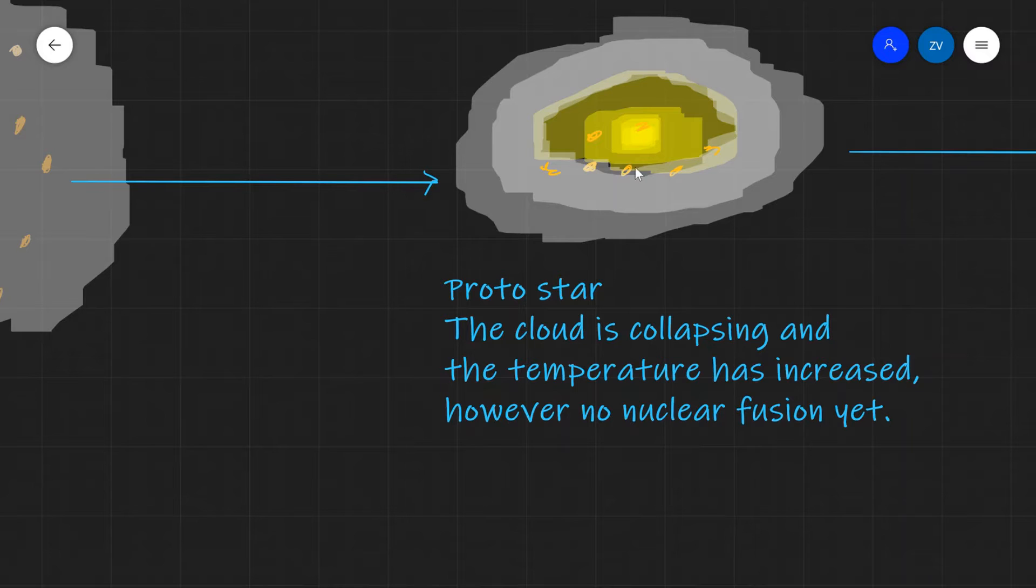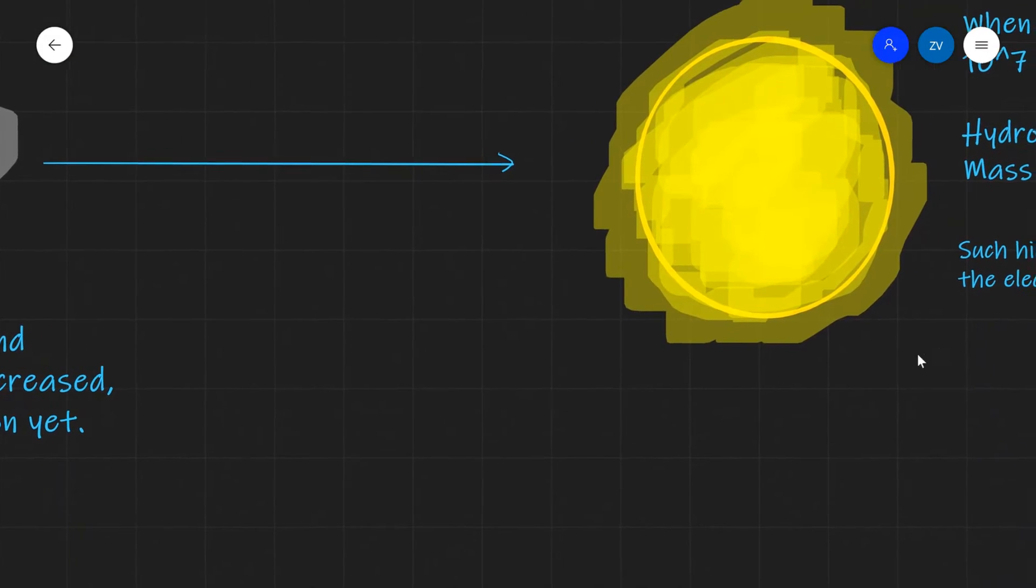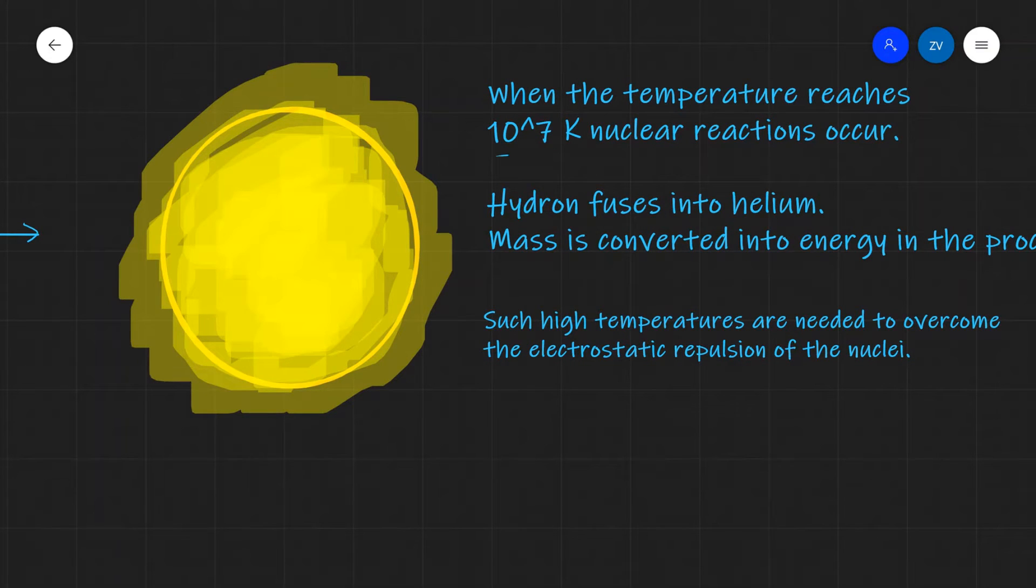When the temperature inside the core reaches approximately 10 to the power of 7 kelvins, and this is a really important number, about 10 million kelvin, nuclear reactions occur and then a star is born.